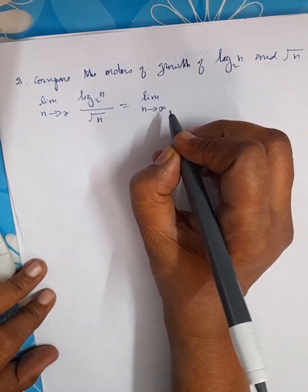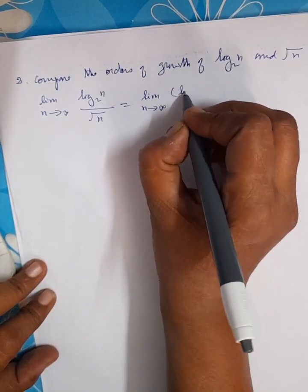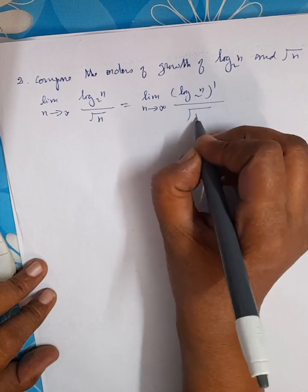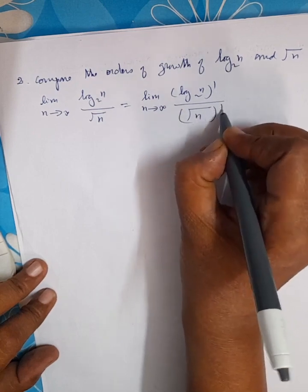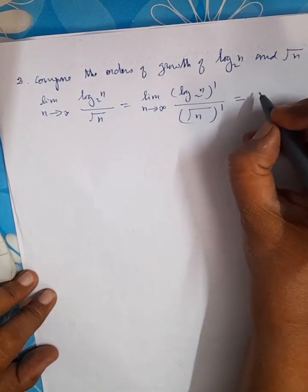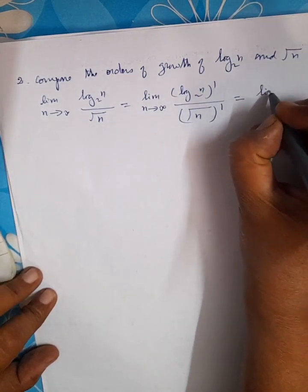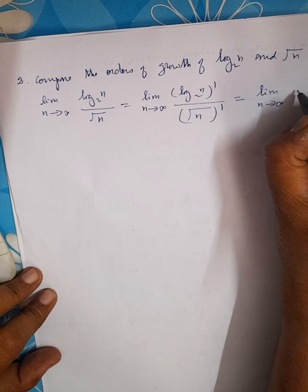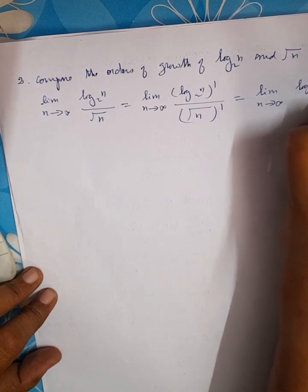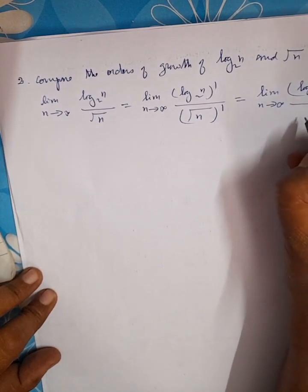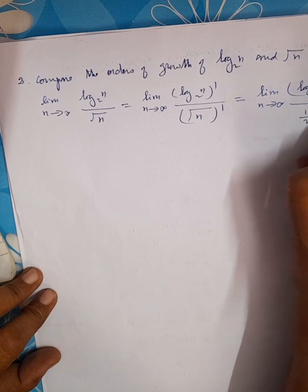We are going to apply L'Hôpital's rule. The first derivative of log₂n is log_e(2) · (1/n), and the first derivative of √n is 1/(2√n). So after applying L'Hôpital's rule we get limit n tends to infinity of [log_e(2) · (1/n)] divided by [1/(2√n)].